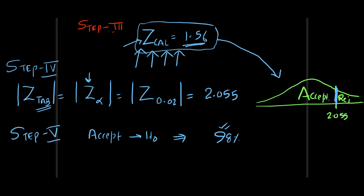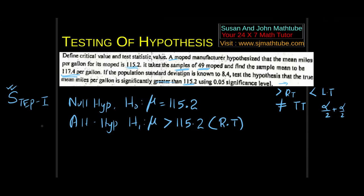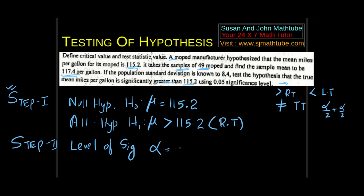Step number 2: level of significance. If it is not mentioned in the question, you can use 1%, 2%, 5%, or 10% — I always prefer a nominal 5%. In this question it is already given, so alpha = 0.05.